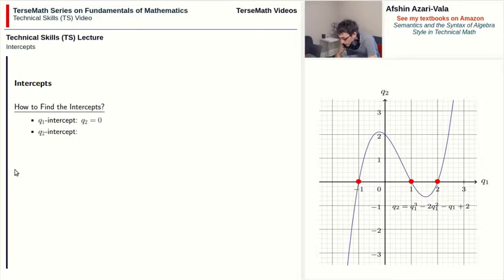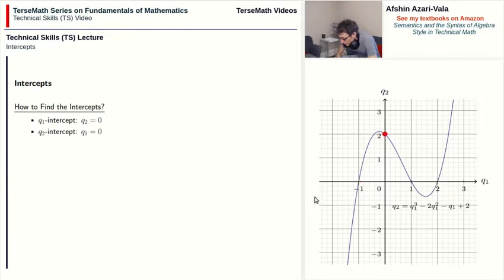In a similar way we can find q2 intercepts by setting q1 equal to zero. As an example in the same graph here, because a q2 intercept is on the q2 axis, its q1 coordinate has to be zero. Therefore, if you replace q1 with zero in your equation, you will find the q2 intercept.